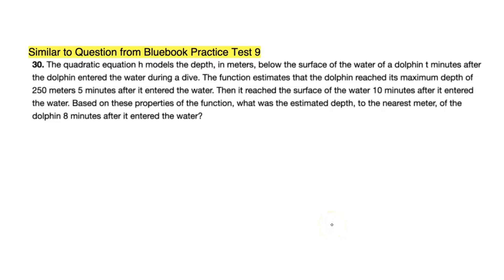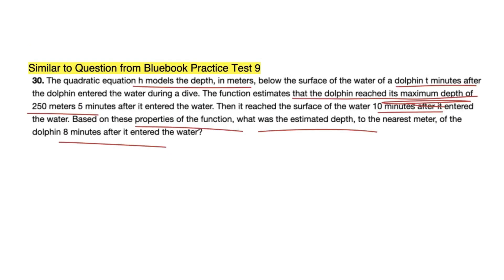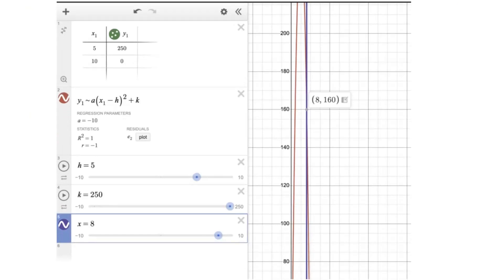Similar to a question from Blue Book practice test number 9. It says a quadratic equation H models the depth in meters below the surface of the water of a dolphin t minutes after the dolphin entered the water during a dive. The function estimates that the dolphin reached a maximum depth of 250 meters 5 minutes after it entered the water. Then it reached the surface of the water 10 minutes after it entered the water. Based on these properties, what was the estimated depth to the nearest meter of the dolphin 8 minutes after it entered the water? To solve this problem, I'm not going to waste your time here. Let's just abuse Desmos because we love Desmos. On the digital SAT, just use Desmos, guys.